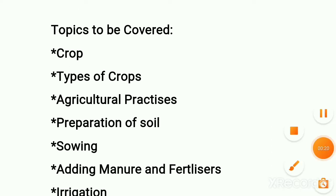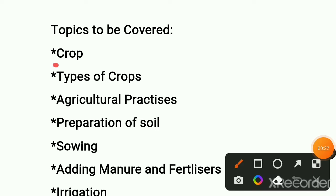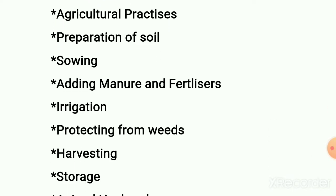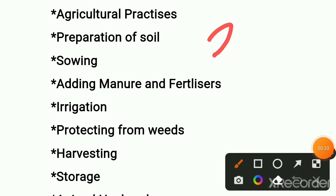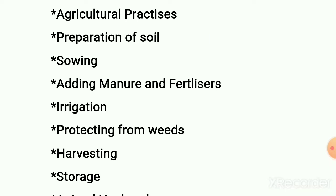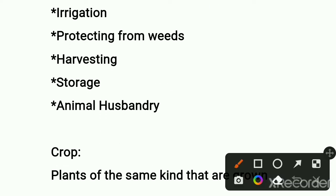Now let's see the topics to be covered. Topics to be covered are: crop, the definition of crop, types of crop, and agricultural practices. Agricultural practices also includes the preparation of soil, sowing, adding manure and fertilizers, irrigation, protecting from weeds, harvesting, storage. These are agricultural practices, and then animal husbandry.